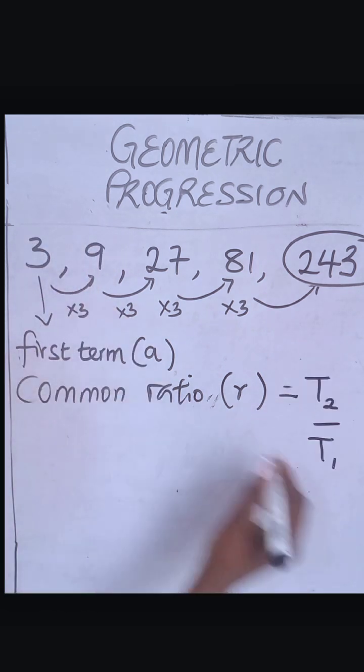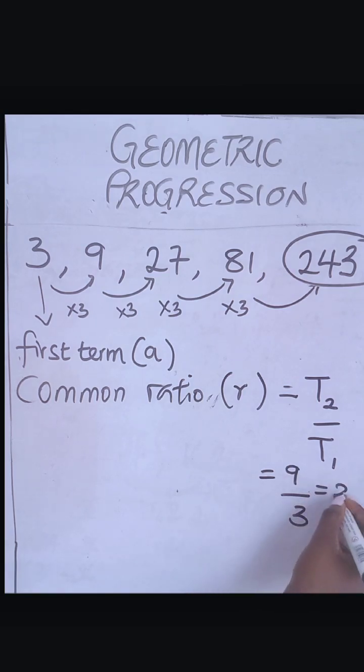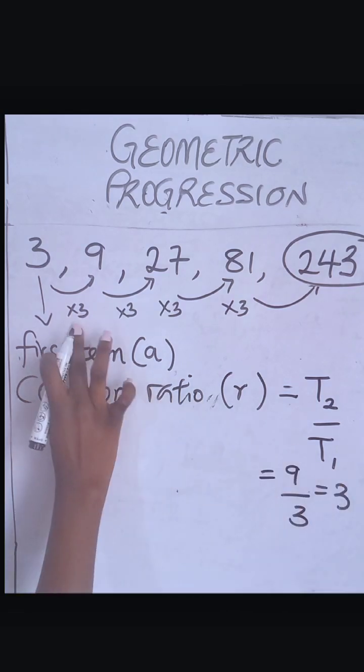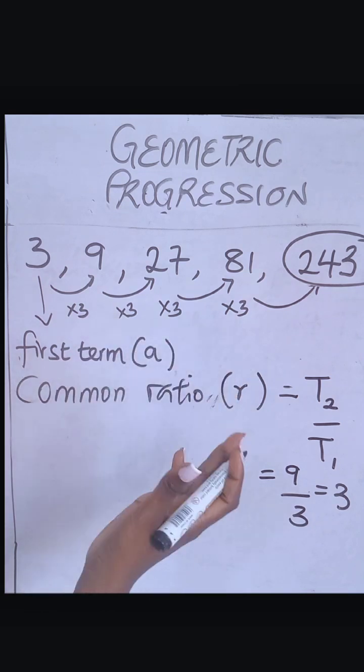What do we mean? The second term is what? 9 divided by 3 will give you what? 3. This tells you the common ratio is 3, right?